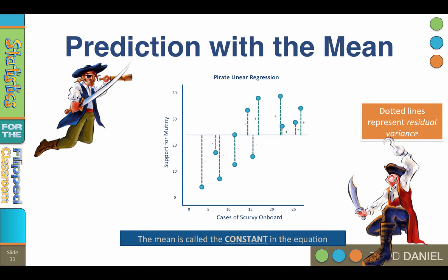Let's look at this simple scatter plot for pirates. Here I have graphed the cases of scurvy on board the pirate ship with crew support for mutiny. I have also added a straight horizontal line that represents the mean. You can see that almost none of the cases fall exactly on the mean. When you predict using the mean, every data point deviates from the mean of y, and this is called residual variance. The dotted lines represent the residual variance or error.